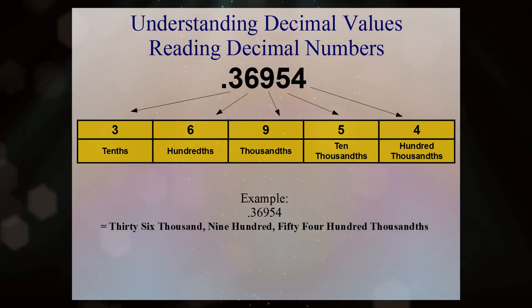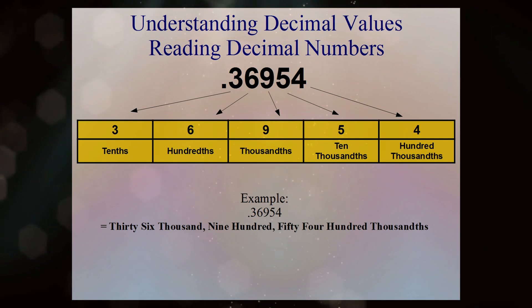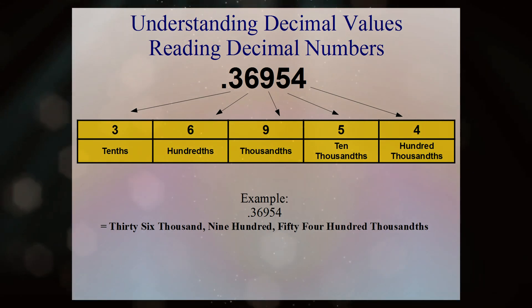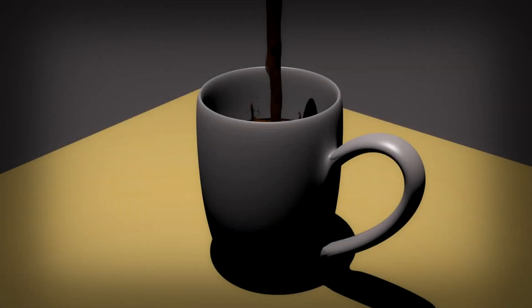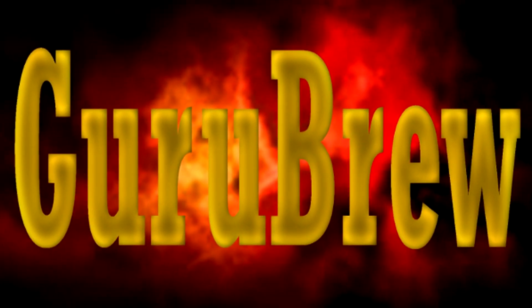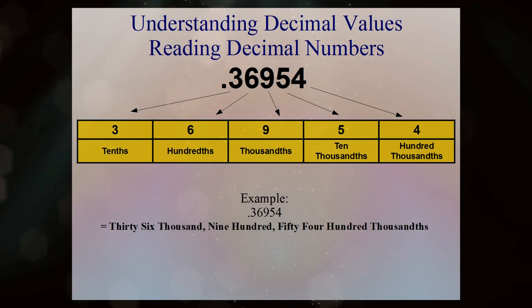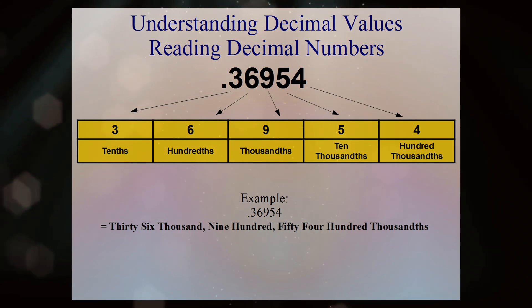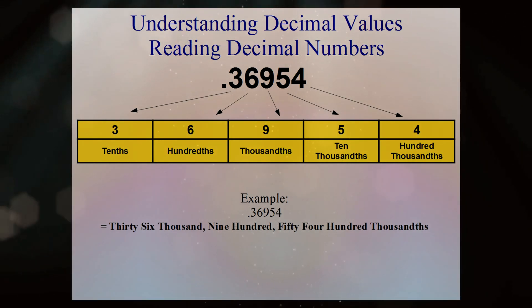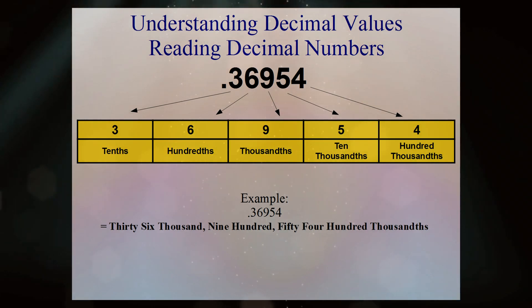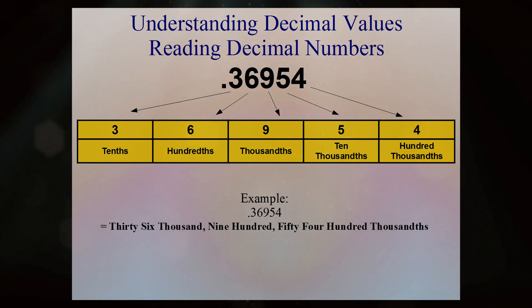I thought I would give you a quick lesson on how to read decimal numbers and how to understand the decimal values. Let's get started. This is the easiest way I can think of to explain it, and hopefully you'll catch on real quick. Let's look at our first example: this is point three six nine five four.